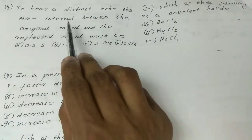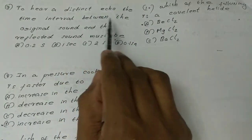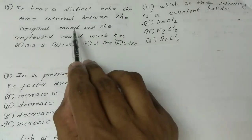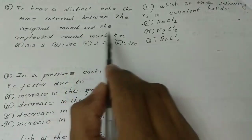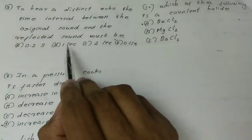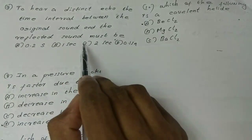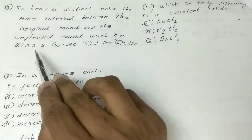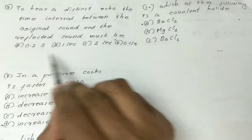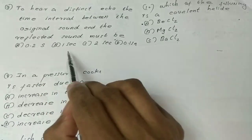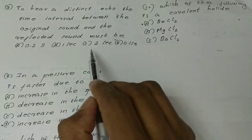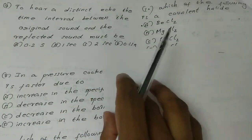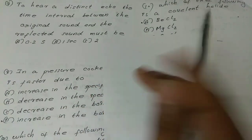Question: To hear a distinct echo, the time interval between the original sound and the reflected sound must be — Option A: 0.2s, Option B: 1s, Option C: 2s, Option D: 0.1s.